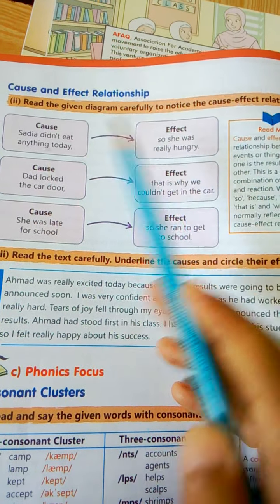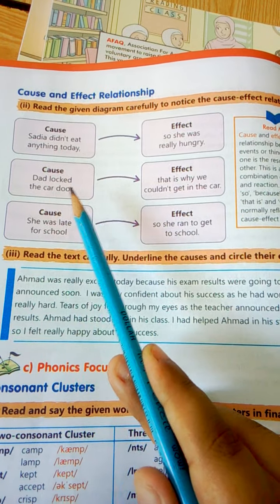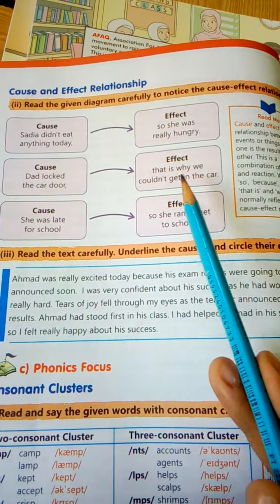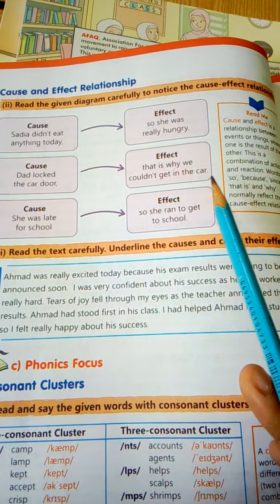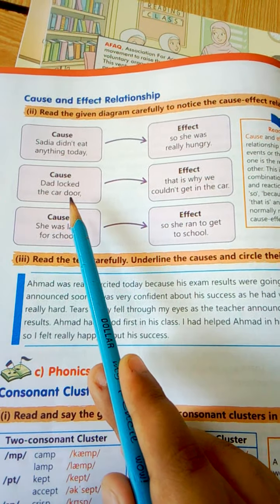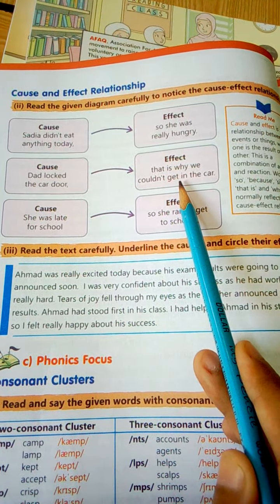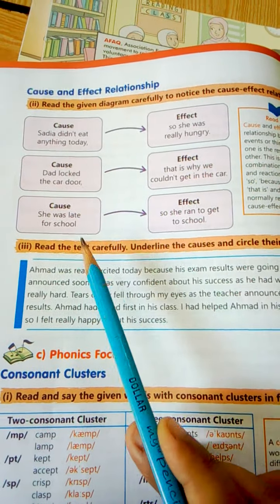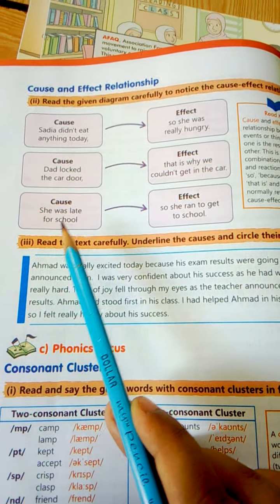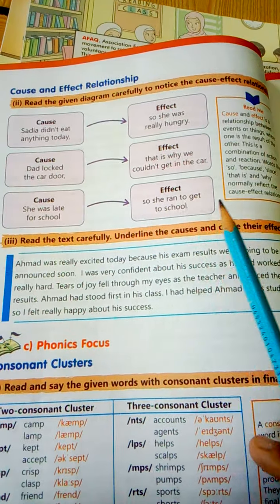Cause: Dad locked the car door, that is why we couldn't get in the car. کیونکہ وجہ کیا تھی کہ دروازہ بند تھا، اس لیے effect یہ ہوا کہ وہ اس کے اندر نہیں بیٹھ سکتے تھے۔